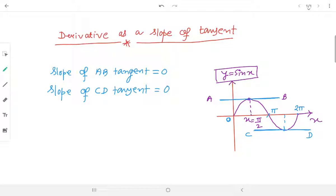AB is our tangent. CD is our tangent. Now, by derivative, we will find out what is the answer. What is the equation? Equation is y equals to sin x. If I differentiate this one with respect to x, dy by dx equals to cos x.